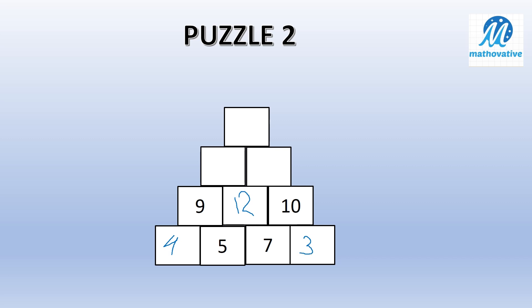So our first and second row is completed. Now we are going to the next row. 9 plus 12 is equal to 21, and 10 plus 12 is equal to 22. And for the last one, 21 plus 22, that is 43. So hope you are getting what we are doing here. So now we will go to the next puzzle.